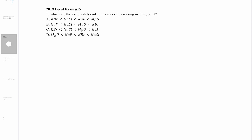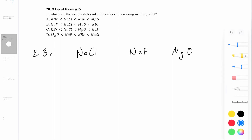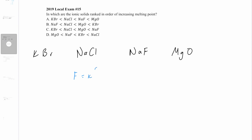Question 15: Rank the ionic solids KBr, NaCl, NaF, and MgO in order of increasing melting point. These are all ionic solids, so their interactions are purely coulombic. We can calculate interaction strength using Coulomb's Law: F = k·q1·q2 / r². Here k is a constant, q1 and q2 are the charges of the ions, and r is the distance between them.